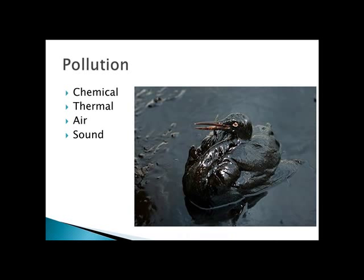Let's take a look at pollution. It comes in many forms: chemical, thermal, air, and sound. Chemical pollution is the introduction of harmful chemicals into the environment — some chemicals can cause a huge effect in extraordinarily small amounts, such as parts per billion or per trillion. A more easily seen example is an oil spill. Thermal pollution happens at the outflows of places like nuclear power plants, which eject hot water, creating algae blooms and other changes to the ecosystem.